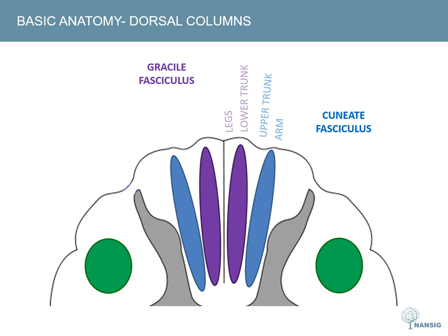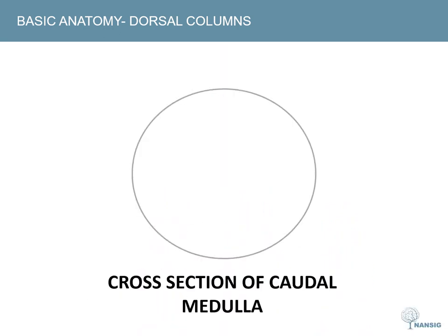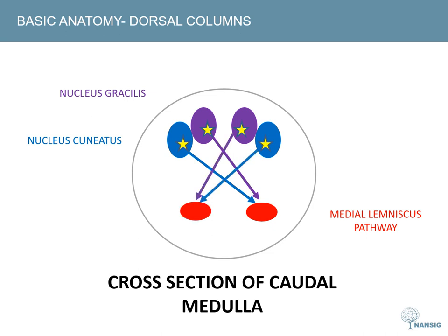Once these axons have been incorporated, they move ipsilaterally upwards towards the brainstem. Eventually those ascending axons reach the caudal medulla. At this point there's been only one sensory neuron linking, say, the skin of your fingertip to your brainstem, and the cell body of that neuron sits in the dorsal root ganglion. Fibres in the cuneate fasciculus synapse with second-order neurons in the nucleus cuneatus, and fibres from the gracile fasciculus do the same in the nucleus gracilis. The second-order neurons then decussate as the internal arcuate fibres and keep ascending towards the thalamus as the medial lemniscus.